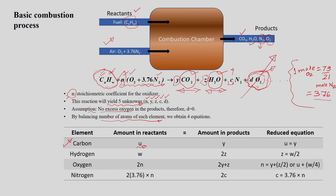U amount of carbon is in the reactor. When it reacts, it produces Y moles of CO2 (since there is one C per CO2). This gives Y = U — the carbon is balanced accordingly.